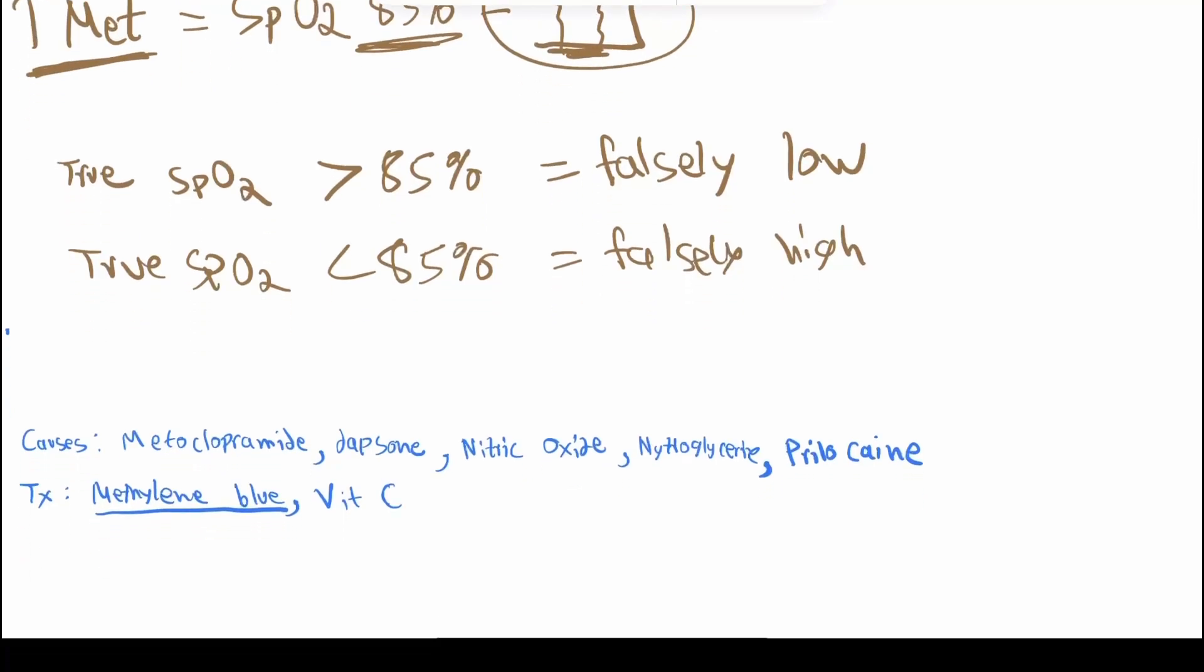And do you guys remember what methylene blue has to do with pulse ox? It's a dye, right? So it can cause a falsely low reading of SpO2.